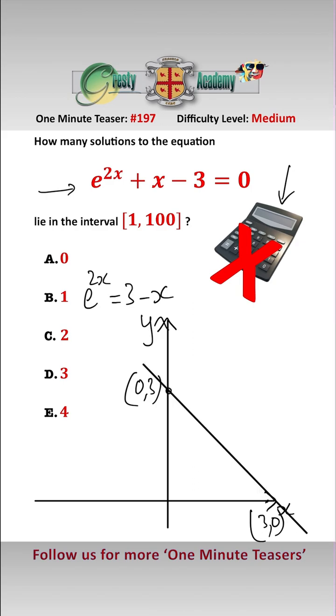Nice and easy so far. Now e to the 2x will go through the point 0, 1, and then it will shoot up very, very quickly like that. So the first thing we can notice is there's only one solution in any interval.